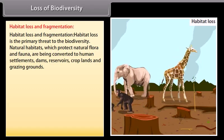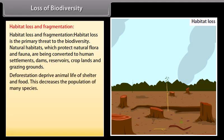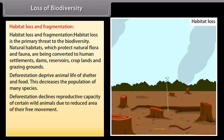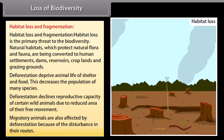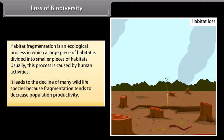Habitat loss is the primary threat to biodiversity. Natural habitats, which protect natural flora and fauna, are being converted to human settlements, dams, reservoirs, croplands, and grazing grounds. Deforestation deprives animal life of shelter and food, decreasing the population of many species. It also declines the reproductive capacity of certain wild animals due to reduced area of free movement, and affects migratory animals due to disturbance in their routes. Habitat fragmentation is an ecological process in which a large piece of habitat is divided into smaller pieces, leading to decline of many wildlife species by decreasing population productivity.